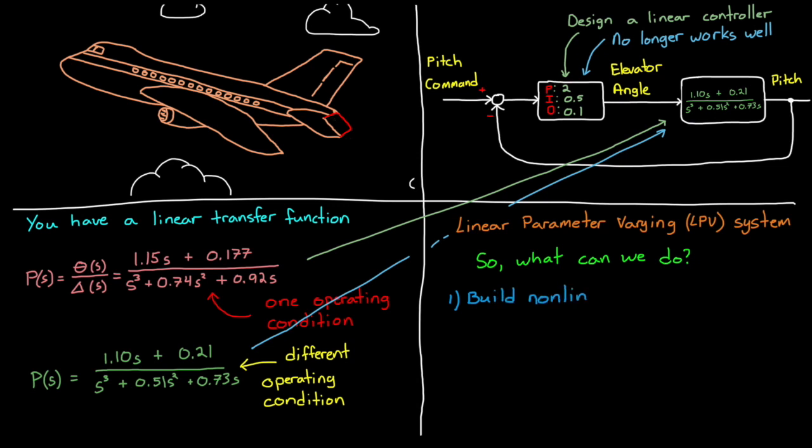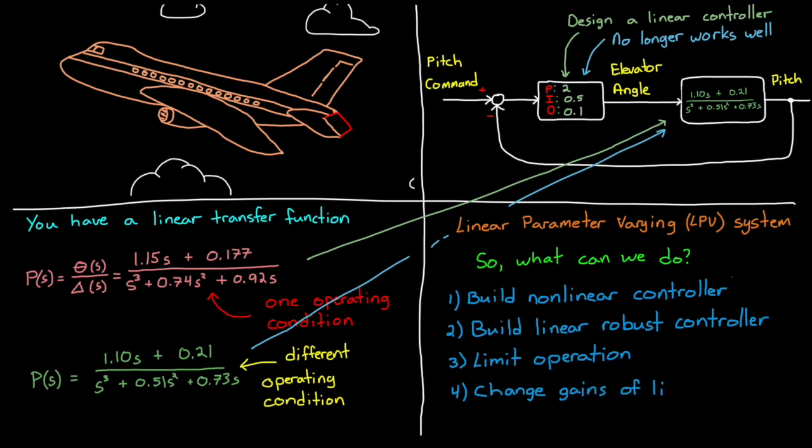We can attempt to design a complex nonlinear controller that will work over the entire operating range. We could try to design a robust linear controller that will work, although this will almost certainly be a drop in performance and may not even be possible. We could just limit the crew to only engage autopilot in cruise under very strict conditions, or we could use a single linear controller and just change the gains of the controller based on a schedule that we defined. Let's go with that option.